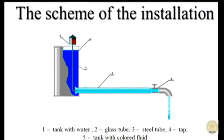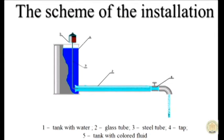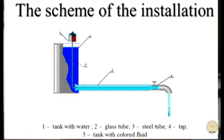The water flowed with different velocities in a glass tube. The same installation you can see in this picture. The installation consists of a tank with water, a glass tube, a steel tube, a tap, and a tank with colored fluid. The density of this fluid was the same as the water density, but the diameter of the glass tube is greater than the diameter of the steel tube. Using these taps, you can control the flow rate and velocity of the fluids.